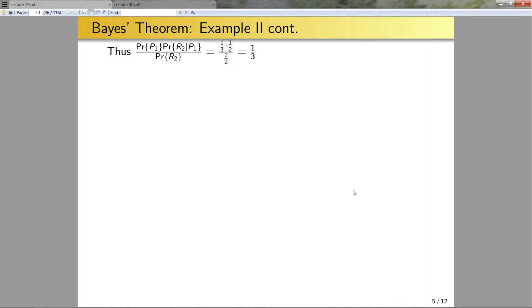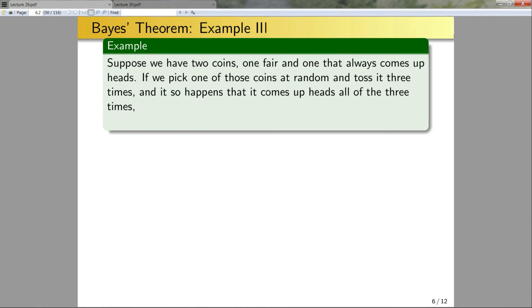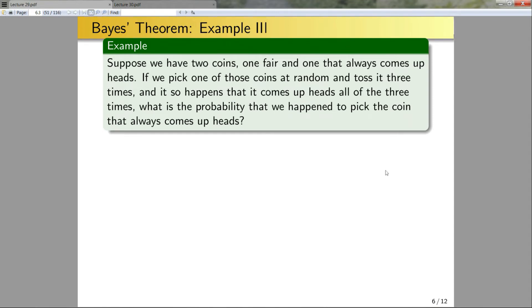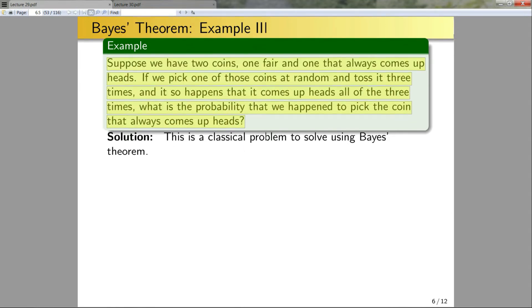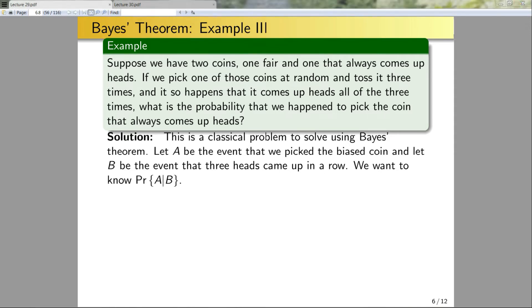Okay, let's look at one more example. Suppose I have two coins — one fair and one that always comes up heads. If I pick one at random and toss it three times and heads came up all three times, what is the probability that we happened to pick the coin that always comes up heads? This is a classical problem to solve using Bayes' theorem. Without Bayes' theorem there's not really a nice way to tackle this. Let A be the event that we picked the biased coin and let B be the event that three heads came up in a row. We want to know the probability of A given B.